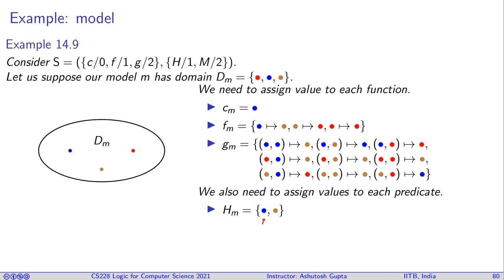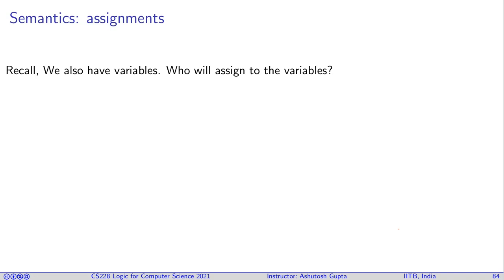For predicate h, which has a single parameter, its interpretation h_m is a subset of domain values — say we drop red, so h_m is {blue, brown}. For predicate m, which takes two parameters, its interpretation is a set of pairs. There are nine possible pairs; we pick some subset of them as the interpretation of predicate m.